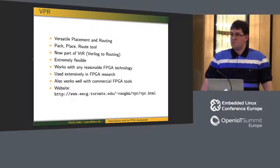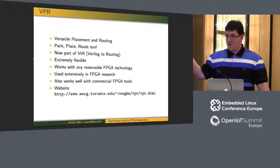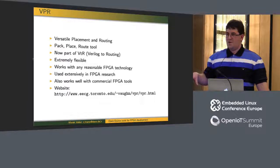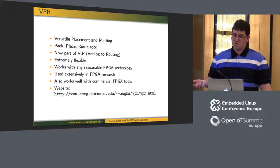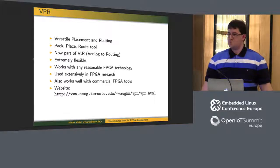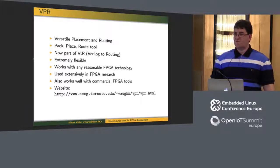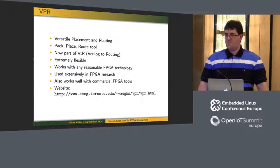VPR is a generally research-oriented tool but extremely flexible. It's now part of Verilog-to-Routing together with Odin2. You can build any sort of FPGA model and load it into VPR, giving you great flexibility. FPGA vendors actually provide somewhat inaccurate models that match their FPGA without revealing too much, so researchers can use VPR for routing research. VPR also works with vendor tools — you can use it instead of the place and route step. The original VPR is available at the University of Toronto website.